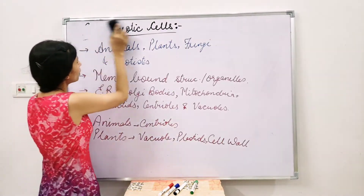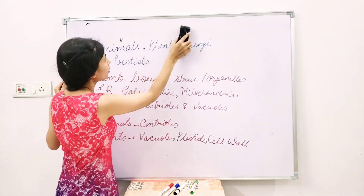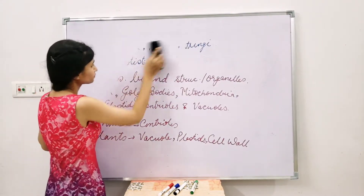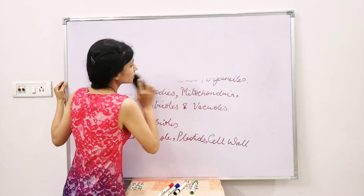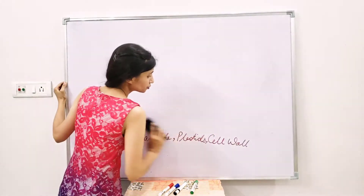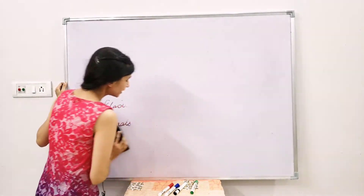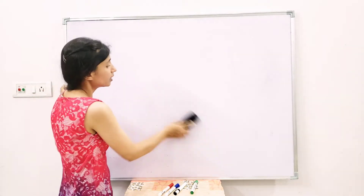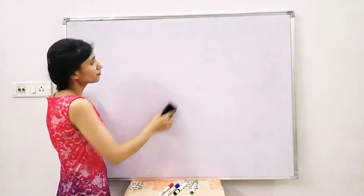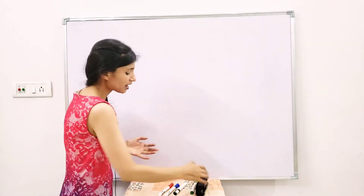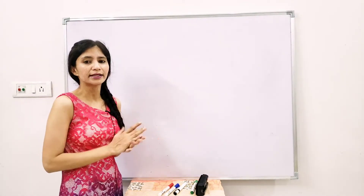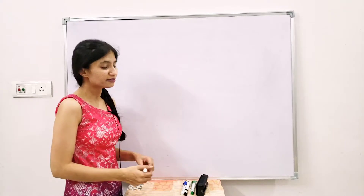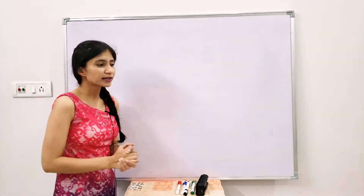The cell wall provides strength to the plant, provides structure, and helps prevent the plant from collapsing or bursting. It also protects the plant from a harsh external environment. These things have been discussed in detail in the class 9 video — you can check out that playlist.